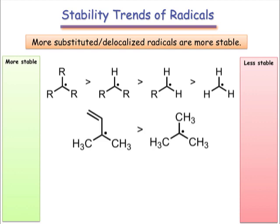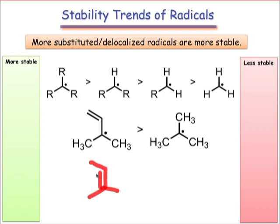The second trend involves electron delocalization. More delocalized or resonance-stabilized radicals are more stable than radicals not involved in resonance. Delocalization lowers the energy of filled molecular orbitals, lowering the energy of the radical overall and increasing its stability. In addition, an important point to note is that resonance imparts radical character to multiple atoms in the structure, which may lead to product mixtures.